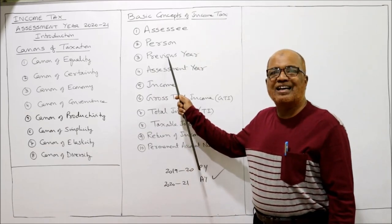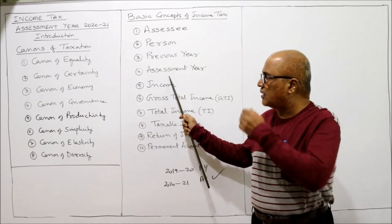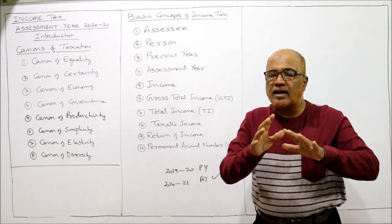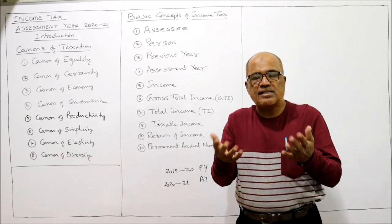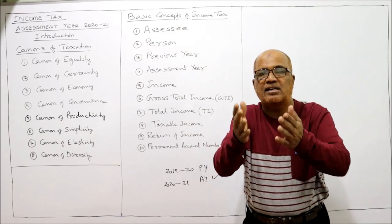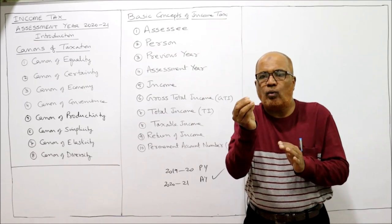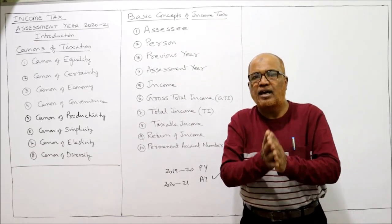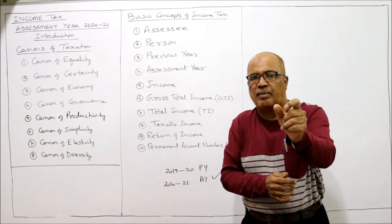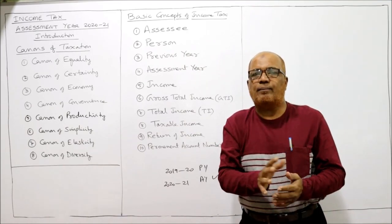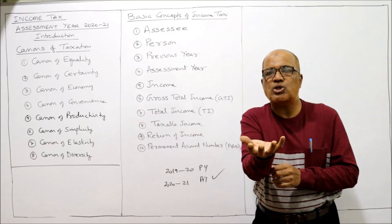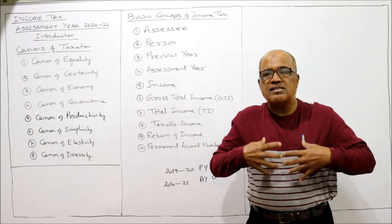Income tax is a tax on income, but the Income Tax Act has not specifically defined what 'income' is. Only some court judgments help identify whether something is income. The Income Tax Act has given an inclusive definition — income includes profits and gains of business, salary received by employees, and similar examples. We can say every income is a receipt, but every receipt is not an income.